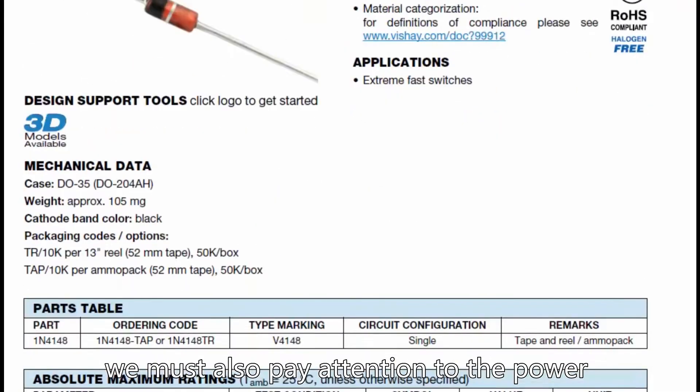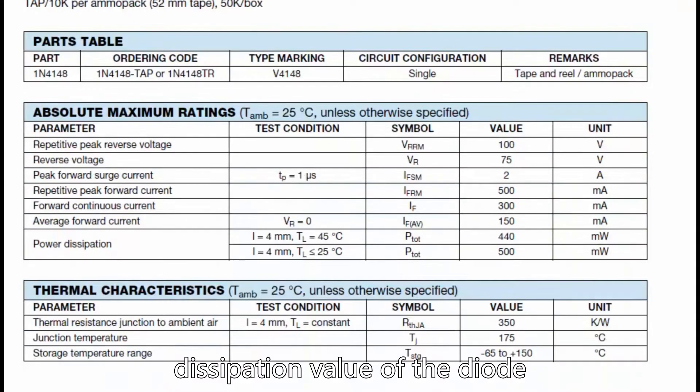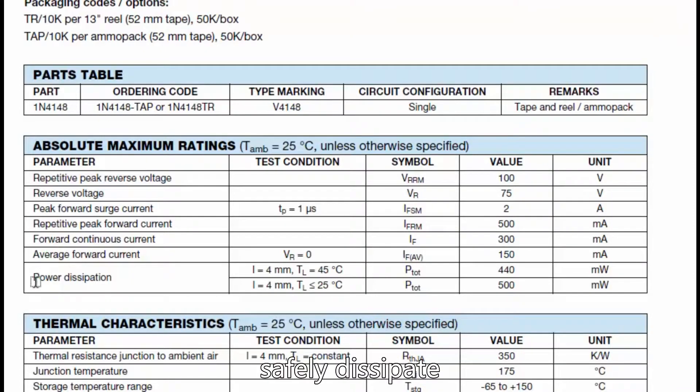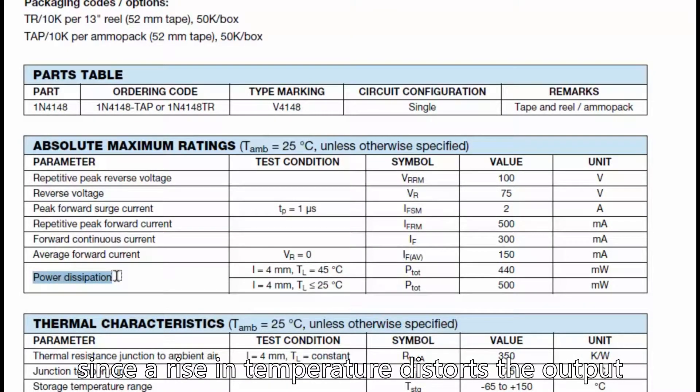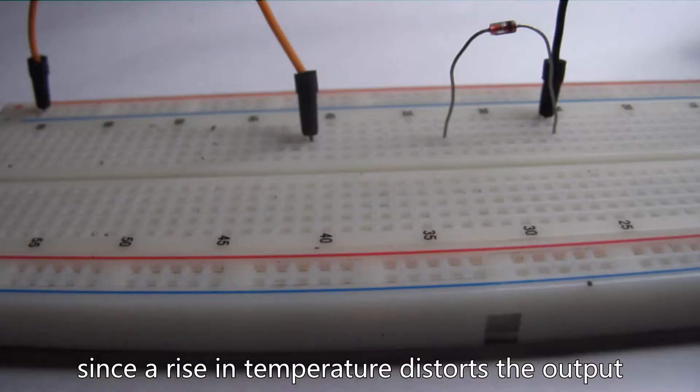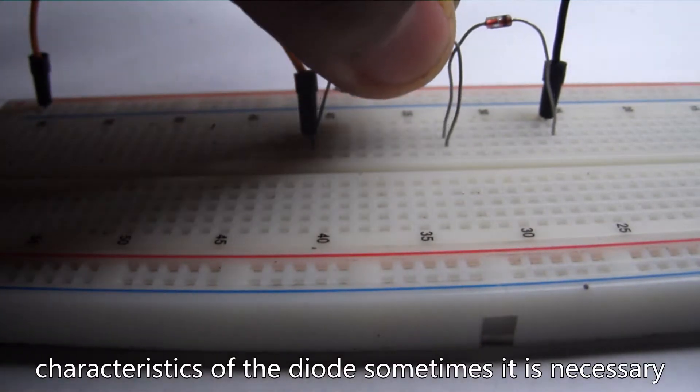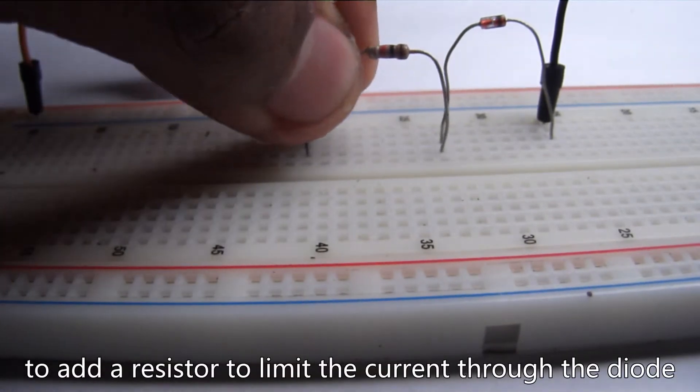We must also pay attention to the power dissipation value of the diode. This value indicates how much power the diode can safely dissipate. Since a rise in temperature distorts the output characteristics of the diode, sometimes it is necessary to add a resistor to limit the current through the diode.